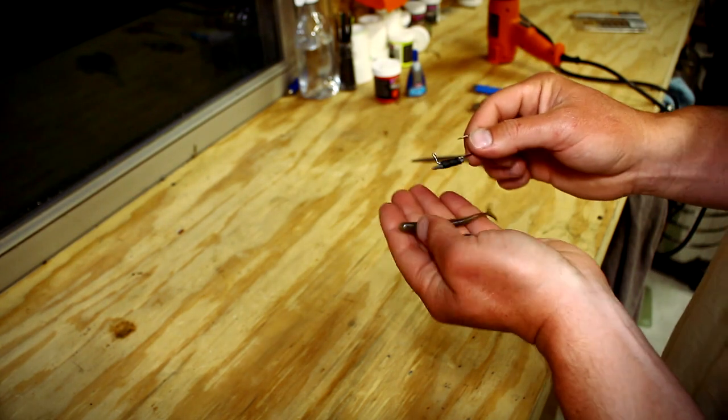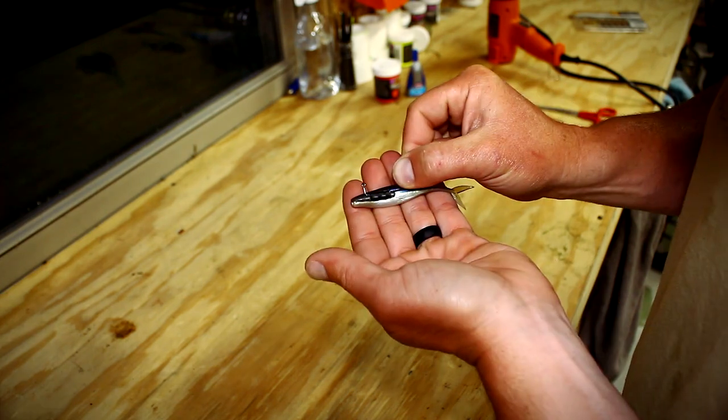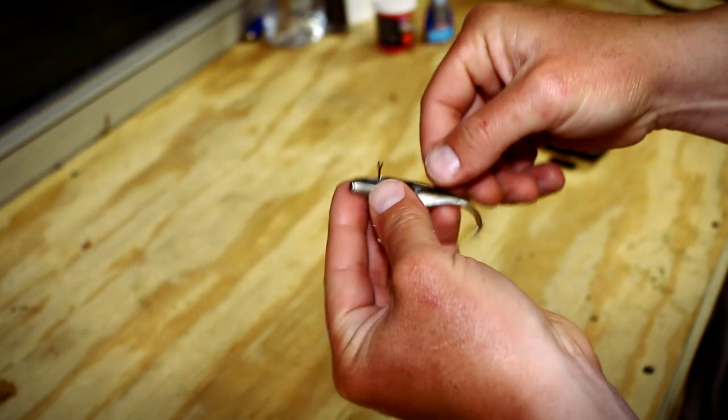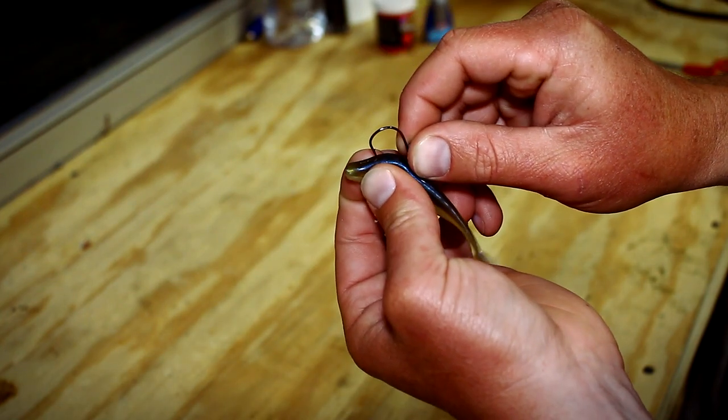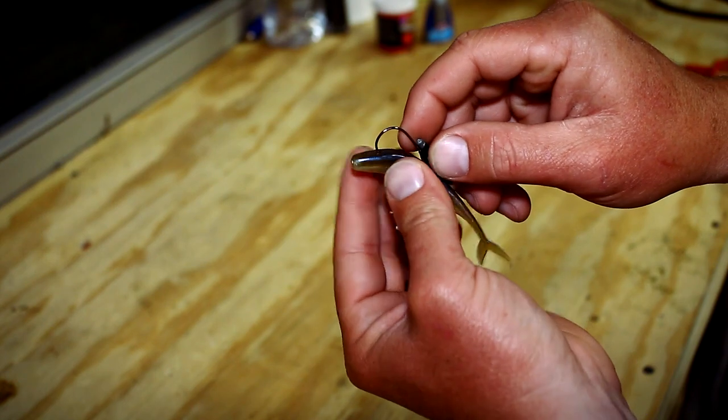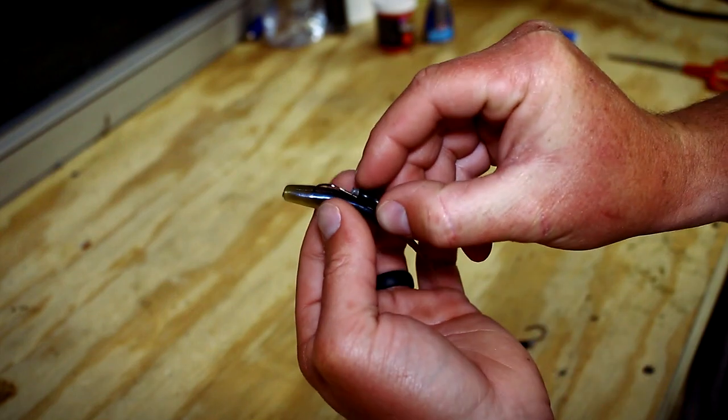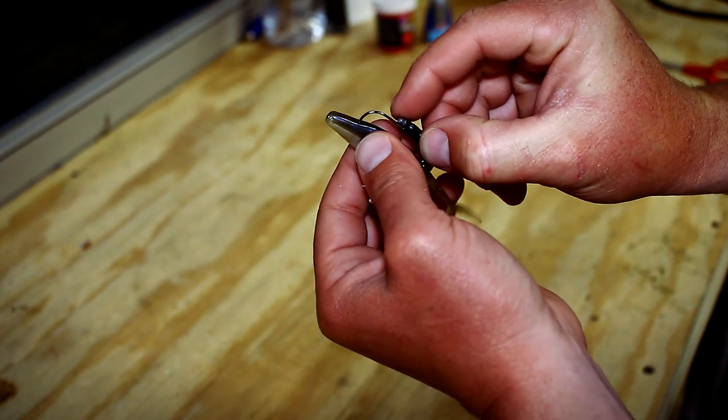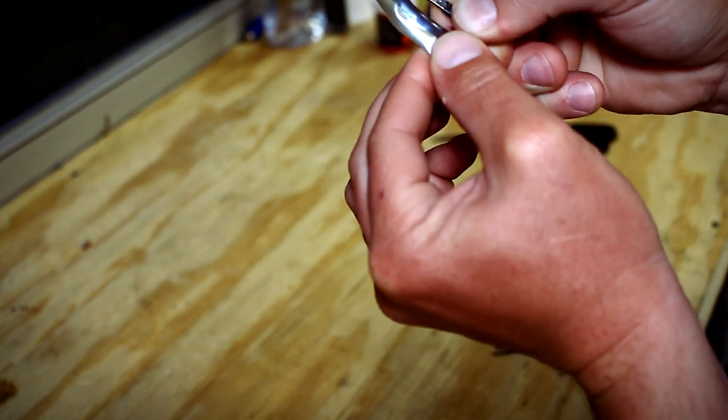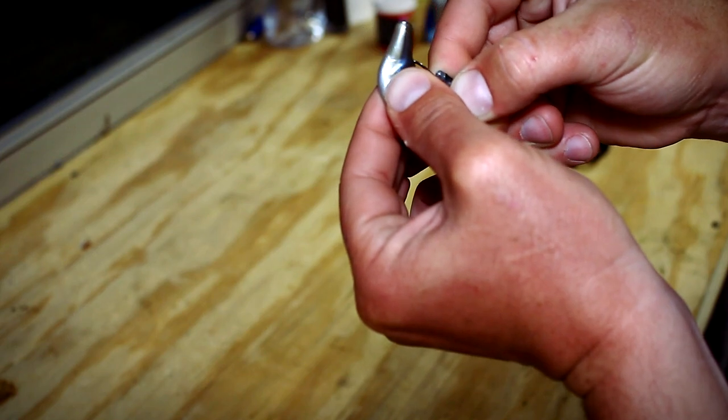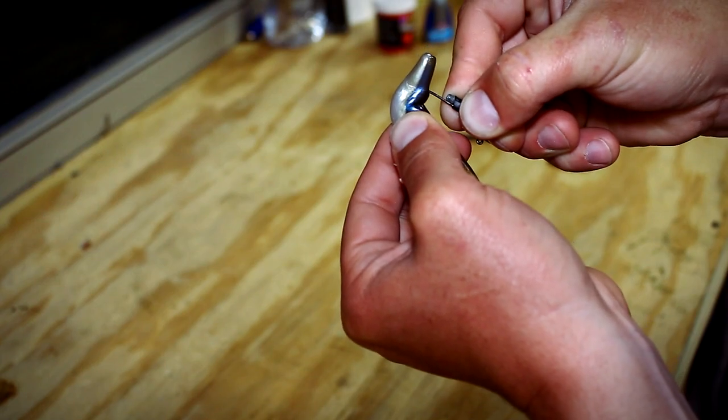Essentially what we're going to do to line this up is you want to come back about a quarter to three eighths of an inch on your bait, something similar to that right there. You want to come through the top about a quarter inch back with your hook. I go in just past the barb on this Gamakatsu hook and then you turn it straight. You want to keep it as straight as possible and thread it through.